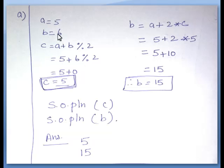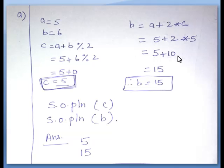Explanation for question A: value of A equal to 5, B equal to 6. C equal to A plus B modulus 2. Modulus means remainder. 5 plus 6 modulus 2 — when we divide 6 by 2 we get remainder 0, so C equal to 5. Next, B equal to A plus 2 into C: 5 plus 2 into 5 is 10, 5 plus 10 is 15. Therefore B equal to 15. So System.out.println of C is 5 and B is 15.